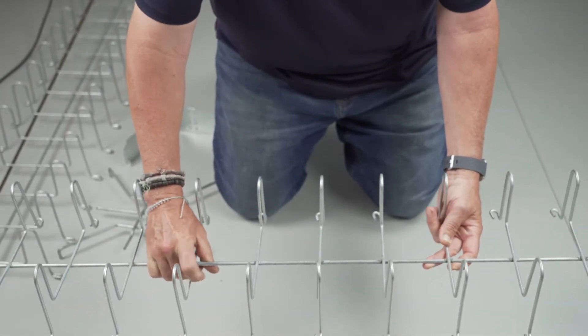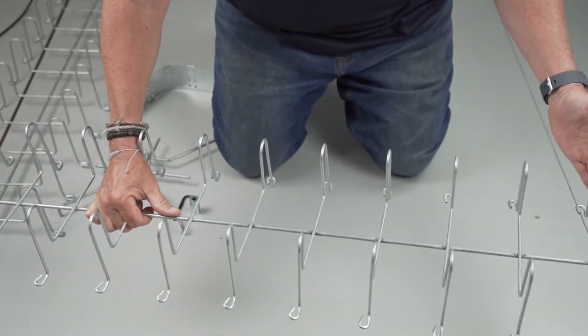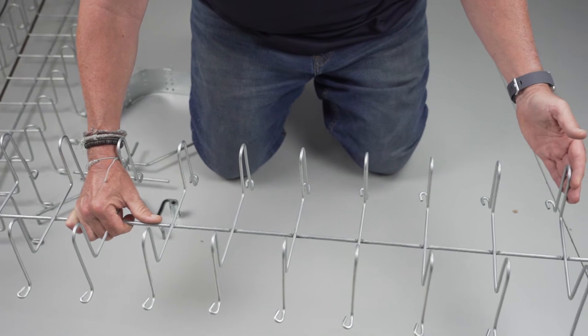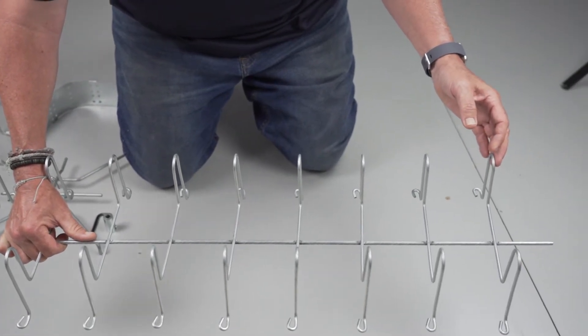So this is the tray itself. This particular tray is meant to go underneath the raised floor to route all of our communication cables.